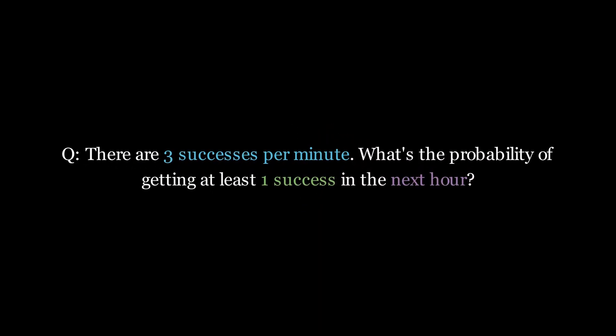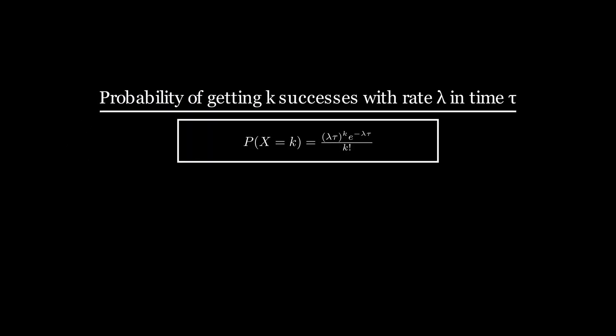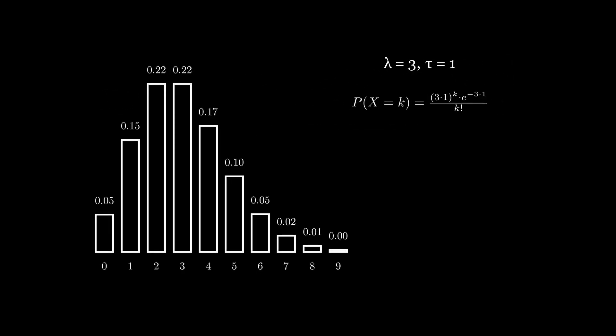Often times we need to compute the probability of events happening in real time. For example, we might be told that there are three successes happening every minute, and we want to know the probability of getting at least one success in the next hour. For questions like this, we need to rely on the Poisson distribution, which governs the total probability of receiving k successes during a time horizon tau for an arrival rate lambda. To visualize the shape of the distribution, let's set lambda to three successes per unit time and tau, the total time horizon, to one unit.